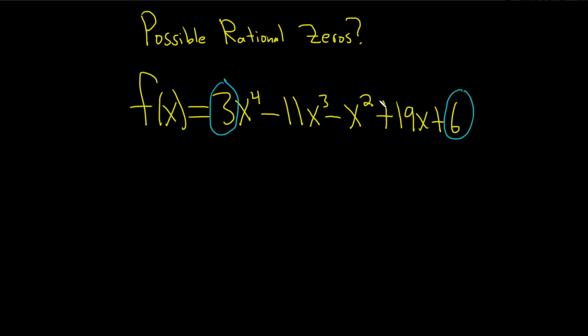So constant term over leading coefficient. So it's factors of 6 over factors of 3. It's always the last one over the first one, or the constant term divided by the leading coefficient.